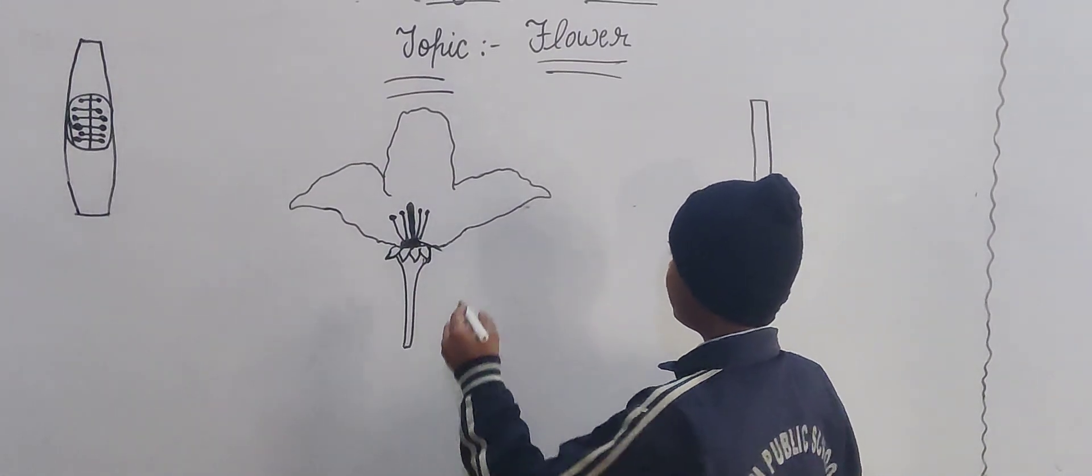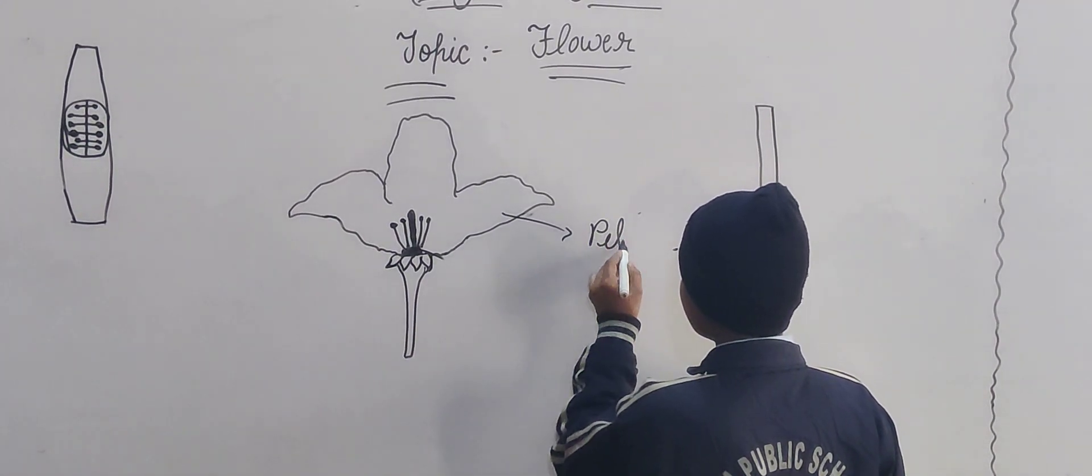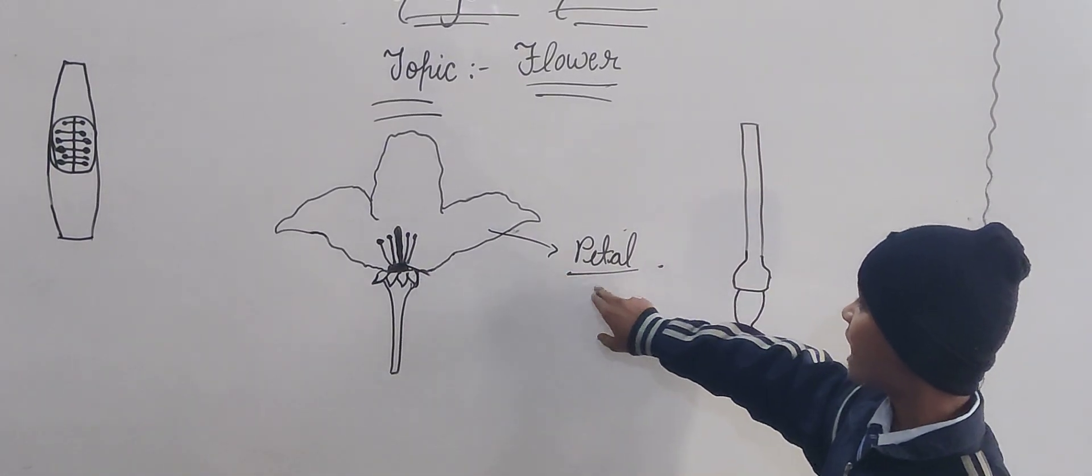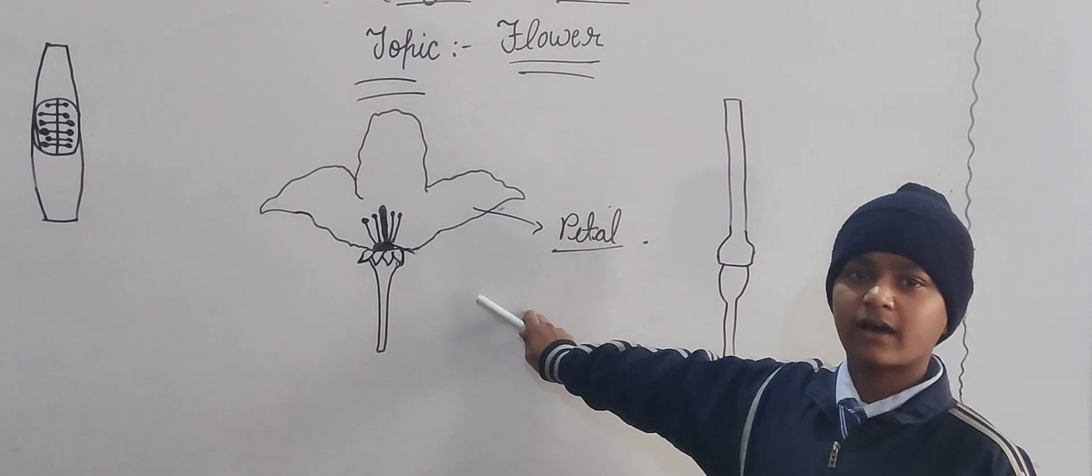This is flower. This is the part of the flower, petals. The prominent part of the open flower are called petals.